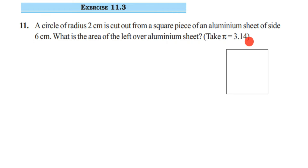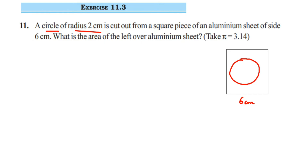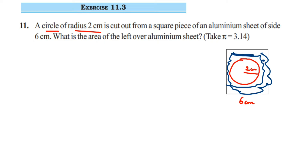What they have given is there is an aluminum sheet in the shape of a square with side 6 centimeter, so all sides are 6 centimeter. From the sheet, they have cut a piece which is in the shape of a circle with radius 2 centimeter. This circle piece is removed from the complete square sheet. We have to find the remaining area — the leftover blue colored portion.